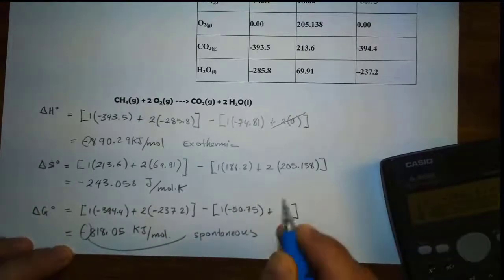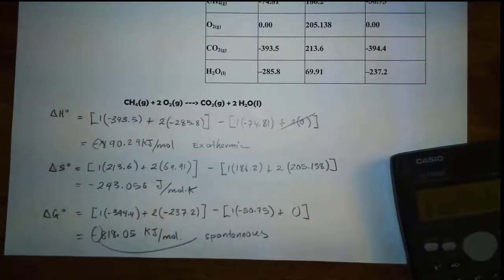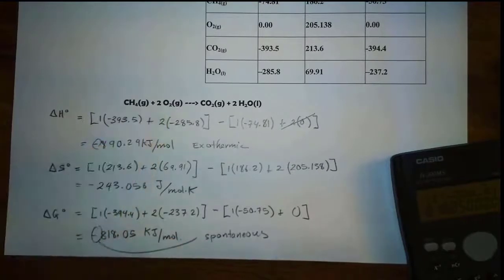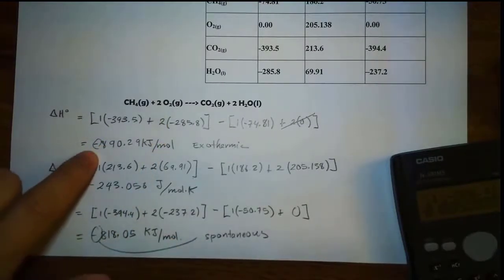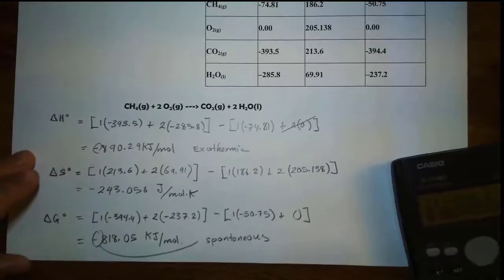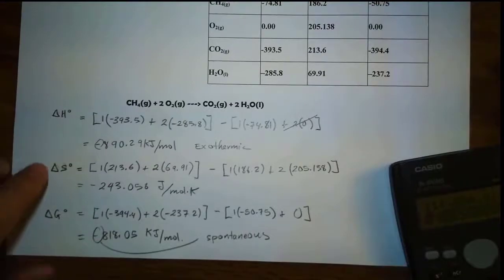It makes sense — methane is extremely combustible when it reacts with oxygen, releasing a lot of energy in terms of heat. So that's all you have to do to calculate delta H, delta S, and delta G naught.